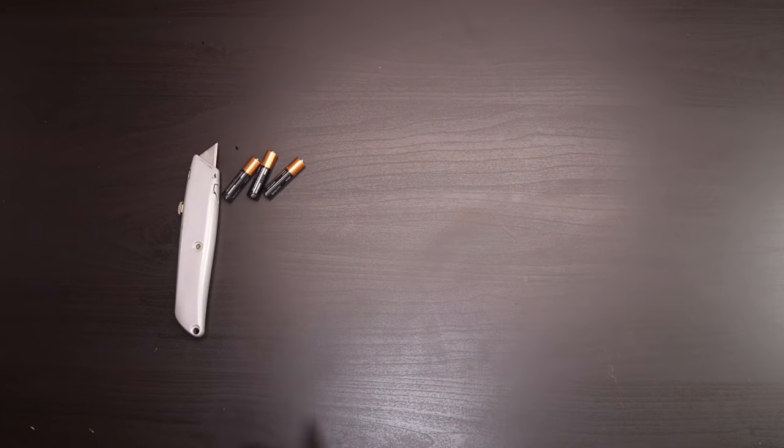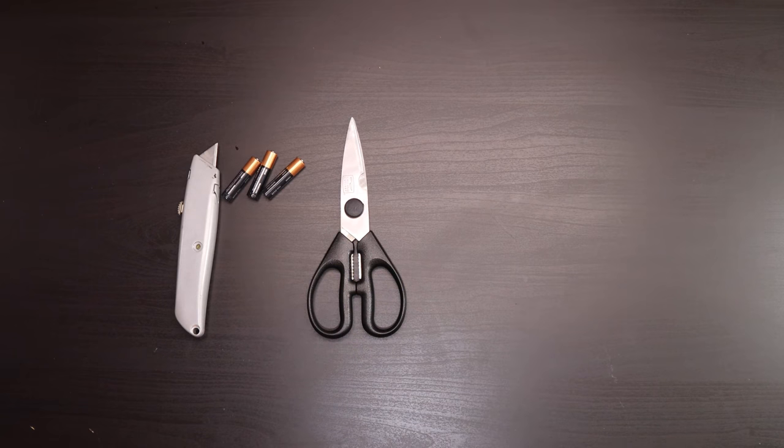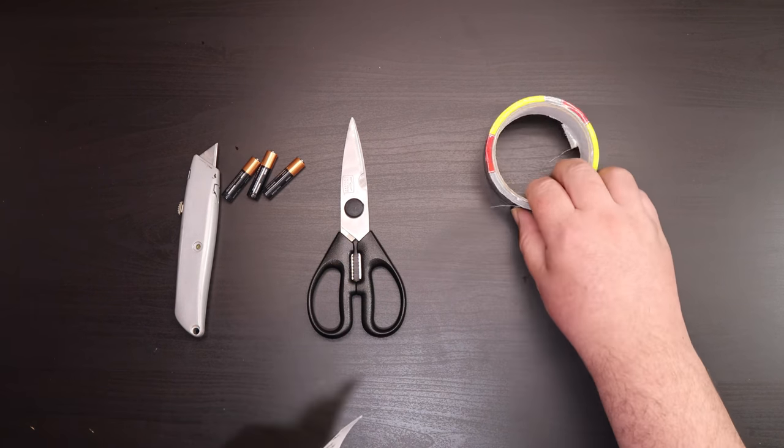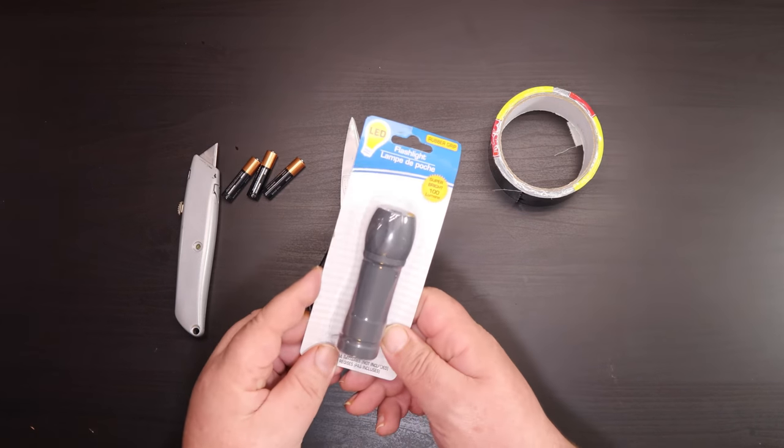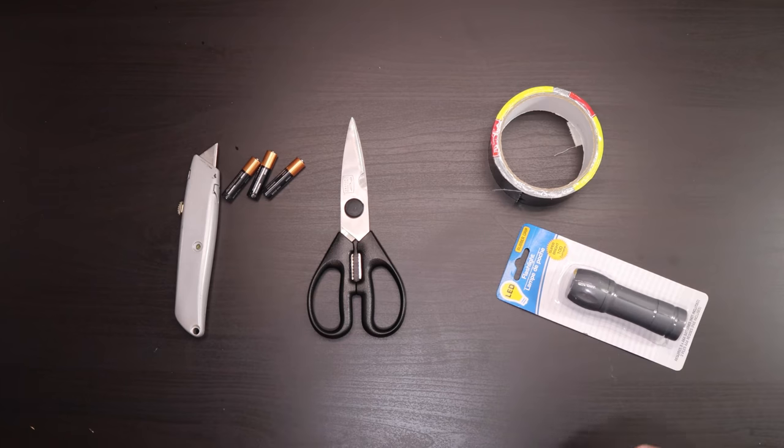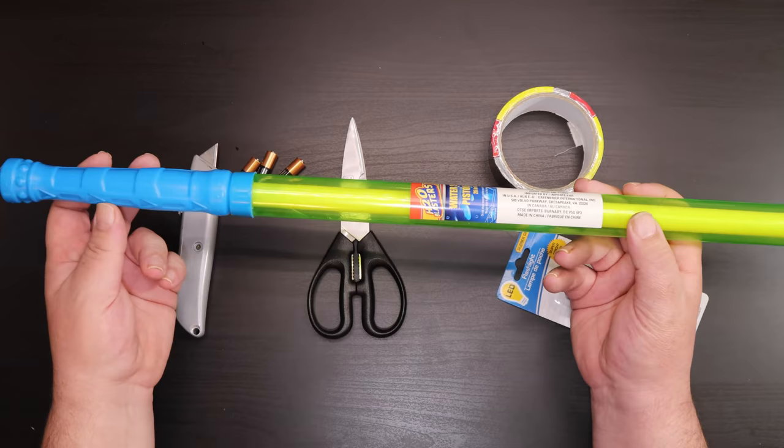We're going to need a box knife, some batteries for that flashlight, and a pair of scissors. They help but are definitely not necessary. Then from the dollar store I went ahead and picked up a small roll of duct tape, a 100 lumen LED flashlight, and then this bad boy H2O blaster.